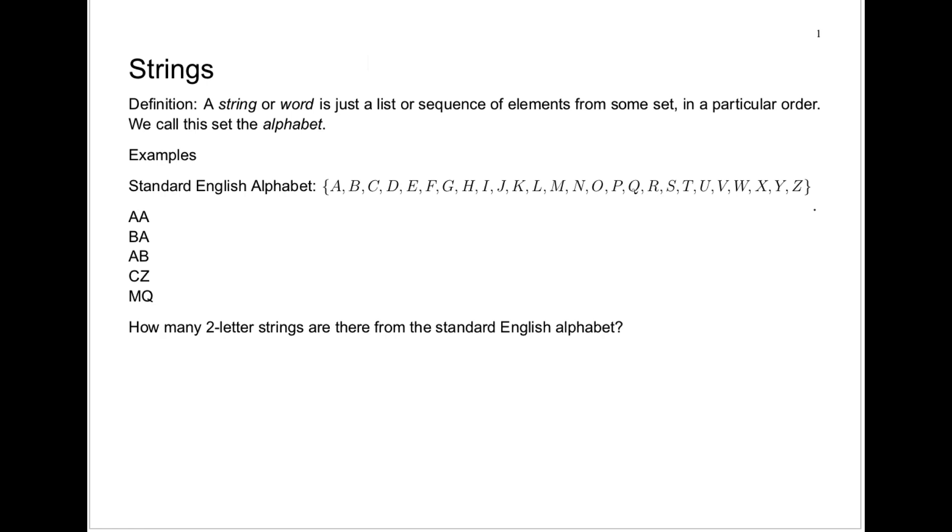The question we're going to deal with is, how many two-letter words are there? When I say word, I mean just sequences of letters in some order. I don't say that it has to have a meaning. So here are some examples of two-letter words or two-letter strings. AA is a two-letter string. BA is a string. AB is a different string from BA. CZ is a string. MQ is a string. And there are many others. But can we tell exactly how many there are?